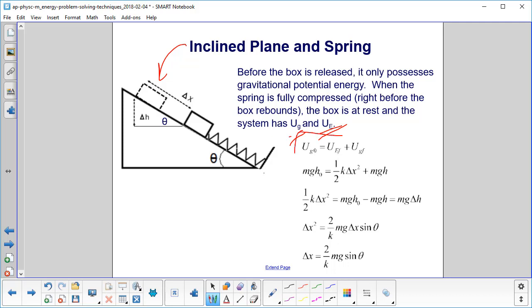Here's our equation. Initially, it has gravitational potential energy, and the final position, which is what we're looking for, has elastic and gravitational potential energy. So we substitute in our values.